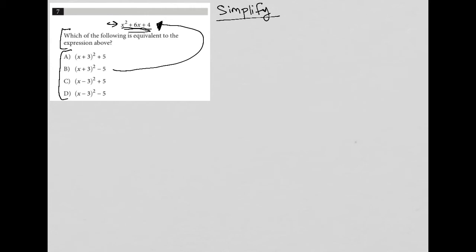So let's start off with answer choice A. So A is saying that we have x plus 3 squared plus 5. So how do I simplify that? Well, x plus 3 squared is the same as x plus 3 times x plus 3. And of course, I still have my plus 5. And I'm going to FOIL this.